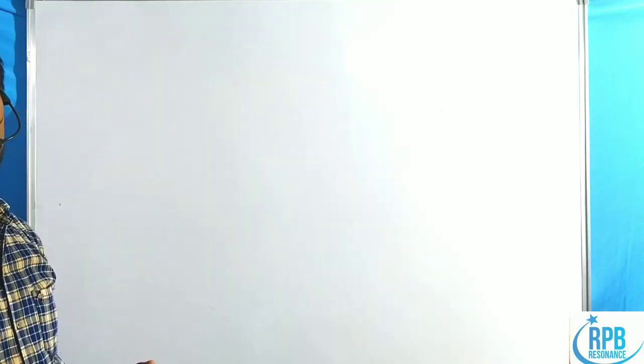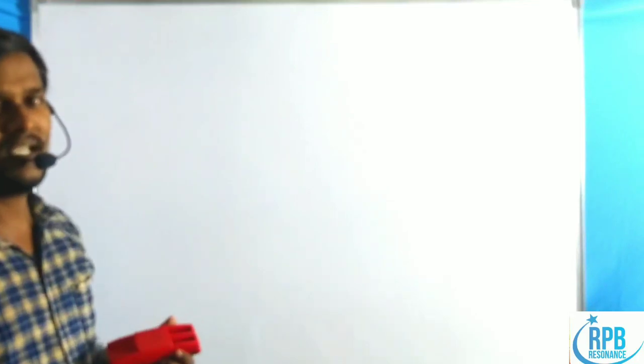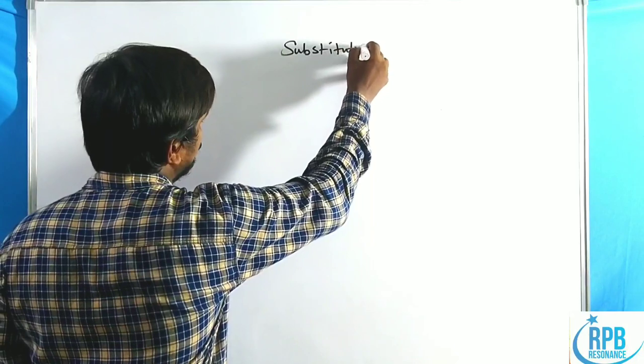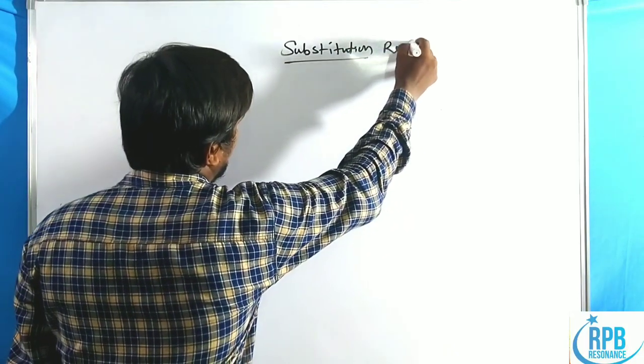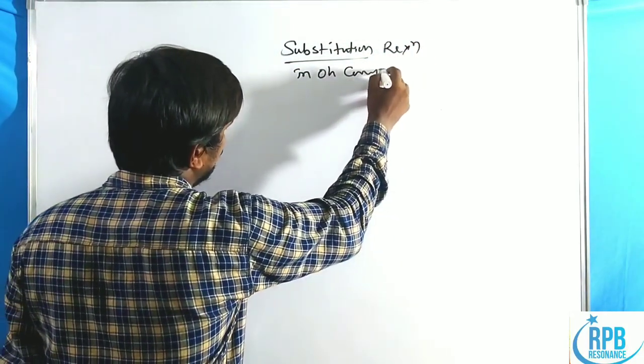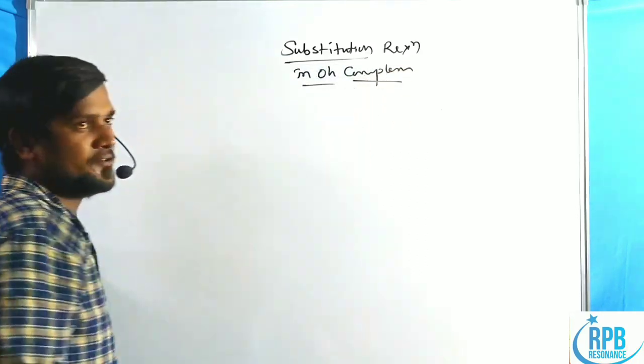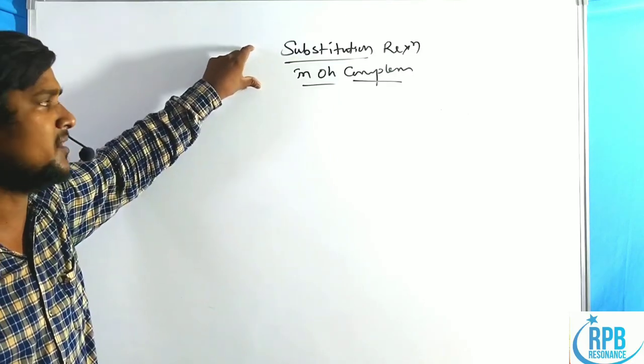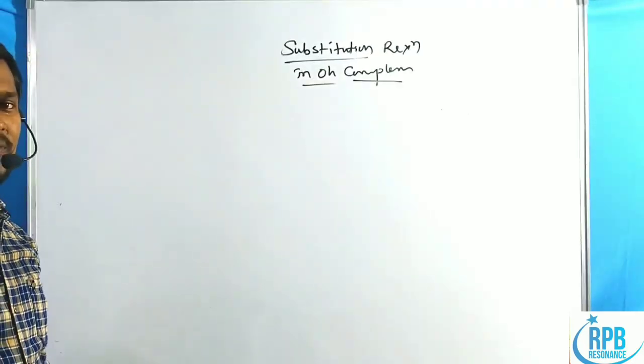Welcome to RPB Resonance Chemistry. In this lecture we are discussing substitution reactions in octahedral complexes. In the previous lecture we discussed lability and inertness of complex compounds. Now we will deal with the substitution reactions — how the mechanical pathways work and how many types there are.